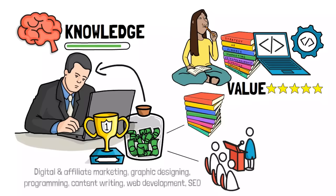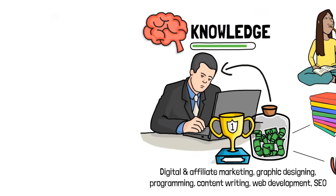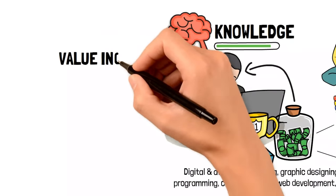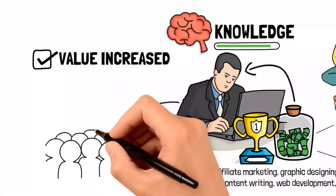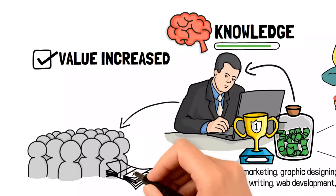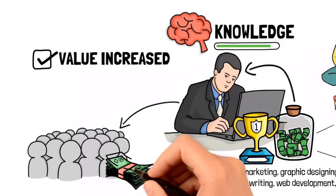With $800, you can learn money-making skills like digital and affiliate marketing, graphic designing, programming, content writing, web development, search engine optimizing, and so on. The second thing to do after absorbing knowledge and increasing your value is to give value. In other words, deploy that value or skill you've gained to create an income stream.